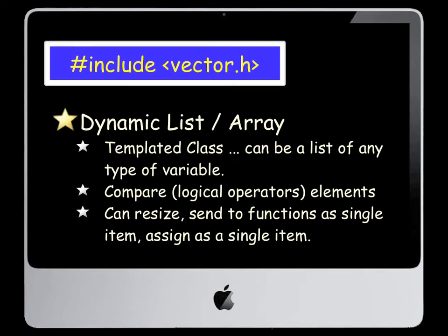We'll also use in our dual credit course a library called vector, which is a dynamic list or array. It's what we call a templated class, which means we can have a list or array of any type of variable. We can use logical operators on elements, and do more complex functions such as resizing, sending the whole vector or list to and from functions as a single item, and we can also assign one vector equal to another as a single item. This is an example of a very powerful library that builds in key capabilities to C++.